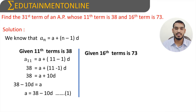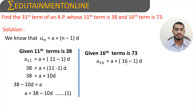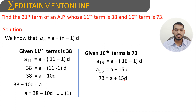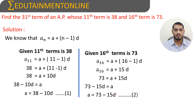It is given that the 16th term of the AP is 73. Substituting in the formula a_n = a + (n - 1)d, we get a_16 = a + (16 - 1)d. Since a_16 is 73, we have 73 = a + 15d. Transposing 15d to the left hand side: a = 73 - 15d. This is equation number 2.